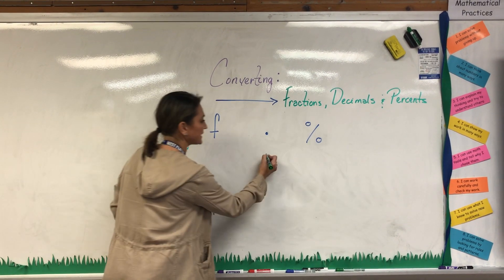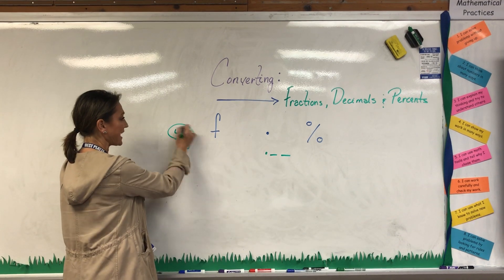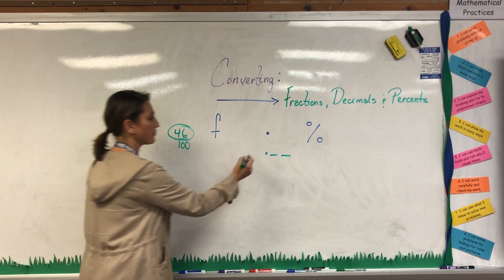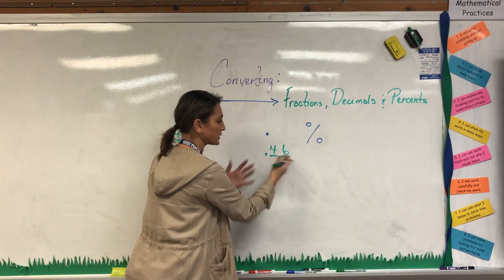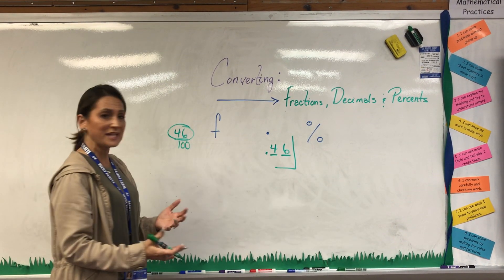Well decimal placement tells me that tenths and hundredths, so I can simply take that 46 hundredths and place it in the hundredths position where it ends in the hundredths position in decimal placement.